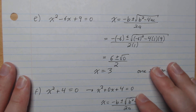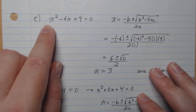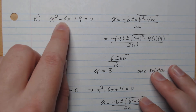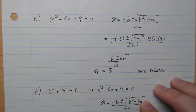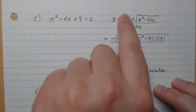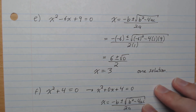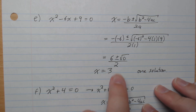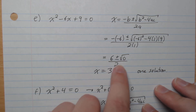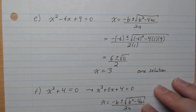Part e: x squared minus 6x plus 9 equals 0. Plugging that in gives plus or minus root 0. Plus 0 or minus 0 both give the same thing, so we have one solution: 6 over 2, which gives x equals 3.